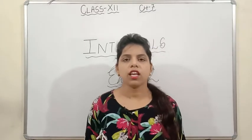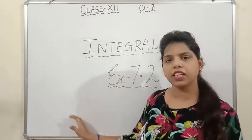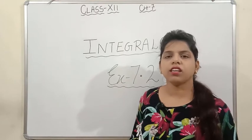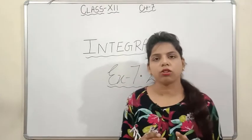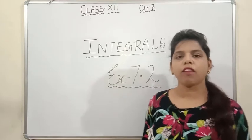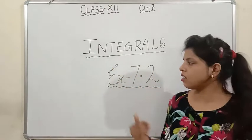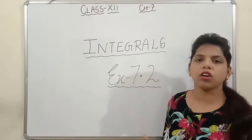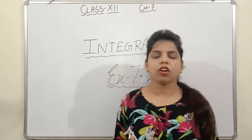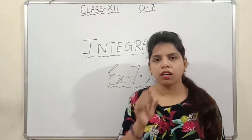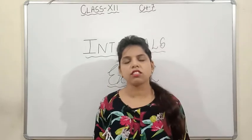Exercise 7.1 was based upon the inspection method, where by looking at the question we could tell what integration to perform. For example, we know the derivative of sin is cos, so we can directly use the inspection method. But this does not work for many functions — you have to apply some tricks. In this exercise we will use integration by substitution method.